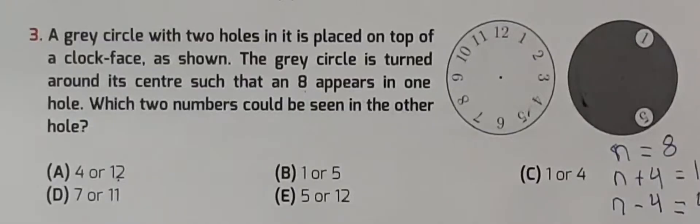Now we have two values: 12 and 4. Which two numbers could be seen in the other hole? 12 and 4 could be seen in the other hole. This is the answer, and option number is A. It is the correct answer: 4 or 12.